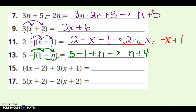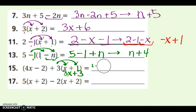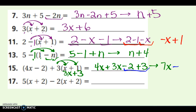For this one, I have to distribute the 3 first. 3 times x is 3x, and 3 times 1 is 3. So now I'm looking at 4x minus 2 plus 3x plus 3. I rewrite it with like terms together: 4x and 3x, then minus 2 and plus 3. Combining: 4x plus 3x is 7x, and negative 2 plus 3 is 1. So my answer is 7x plus 1.